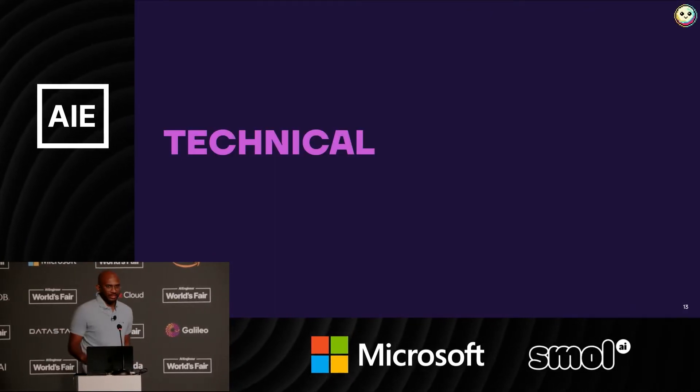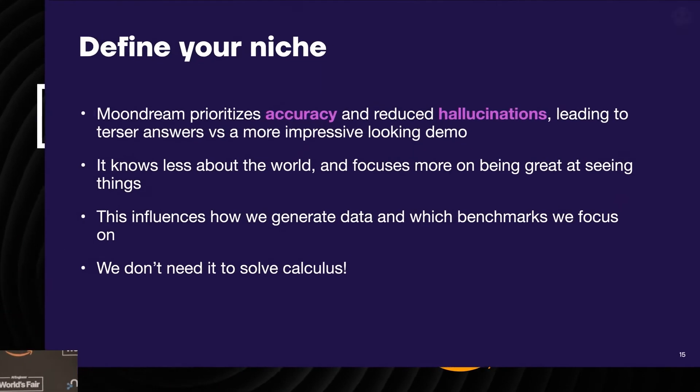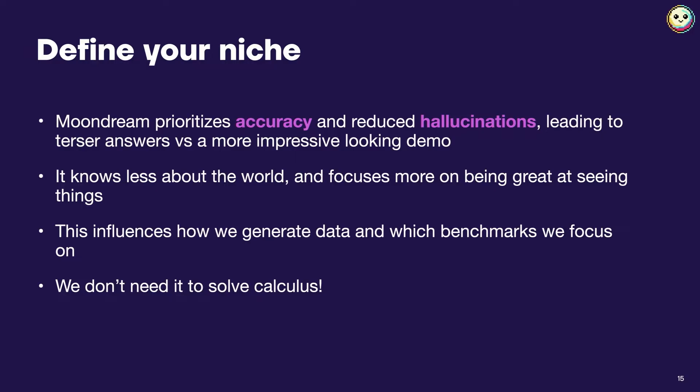Let me dive into a couple of the technical details that make the model succeed despite being small. The first thing we did that I think really helped was deciding what problems the model should solve and what it should not solve. Moon Dream wants to be a developer tool. We focus on being really accurate and not hallucinating. It doesn't really have a lot of knowledge about the world, so if you ask it to write a poem, it's probably not going to help you. It's really focused on answering questions and helping you understand images. This is really important because it affects the type of data that you use and the sort of benchmarks that you want to focus on.